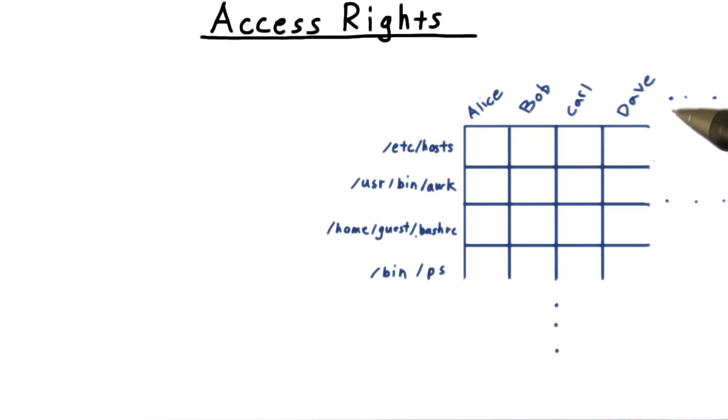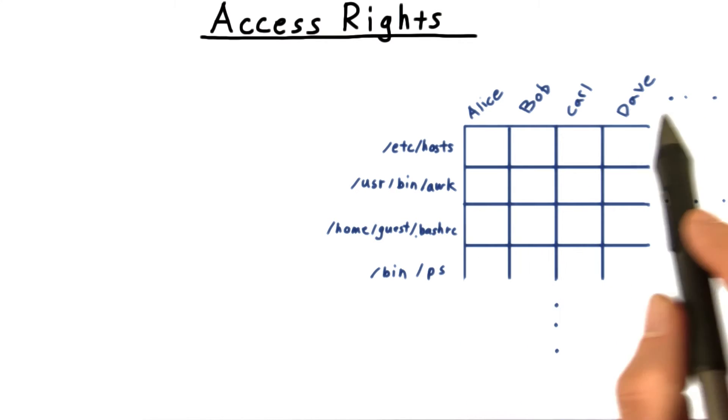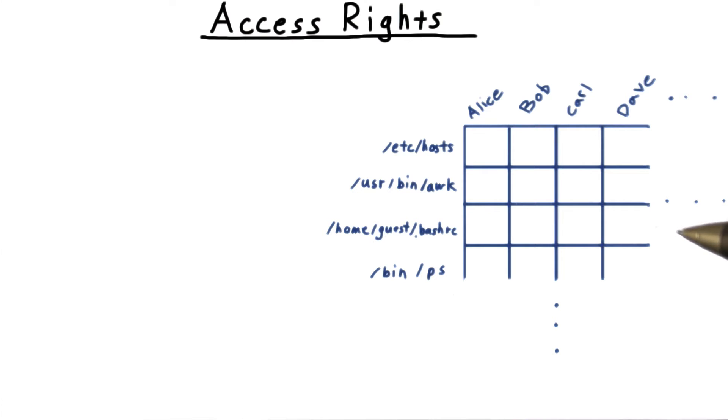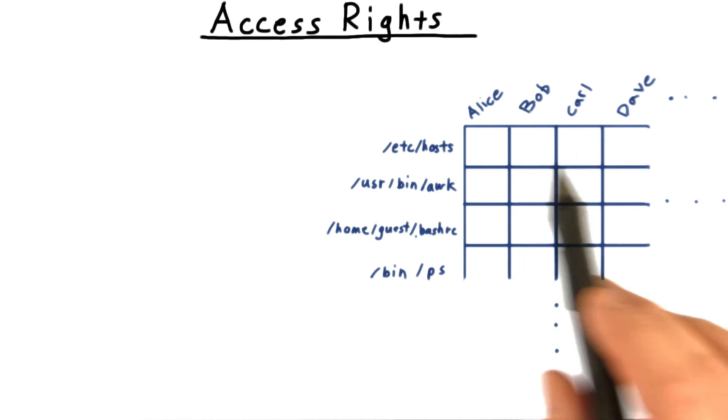Conceptually, we can think of this as a giant matrix, with users for the columns and files as the rows, for instance. And we could store the information that way, but it would be pretty inefficient. Think about how many files would have the exact same set of values.